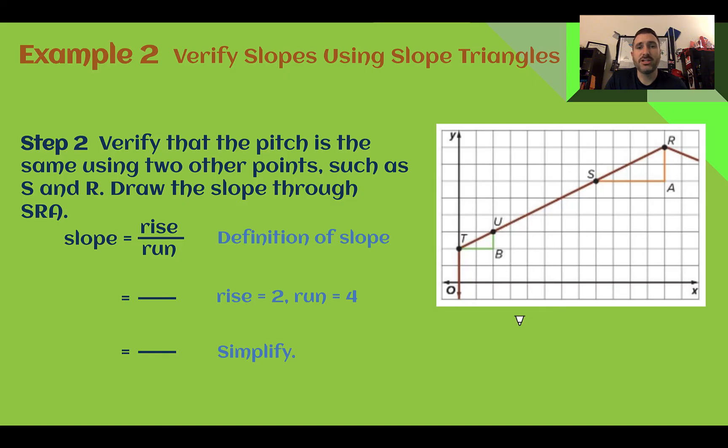Next, let's verify that the pitch is the same throughout using two other points. So we can use the ones up here, S and R. This time, our rise was two, and our run was four. And again, I'm reading it left to right. So even though I might have went to the left here, in the aspect of the picture, I'm reading it left to right. So it's a positive four and a positive two. Then let's simplify. So two fourths is the same as one half. So since this slope was also one half, the pitch of the roof is the same throughout.